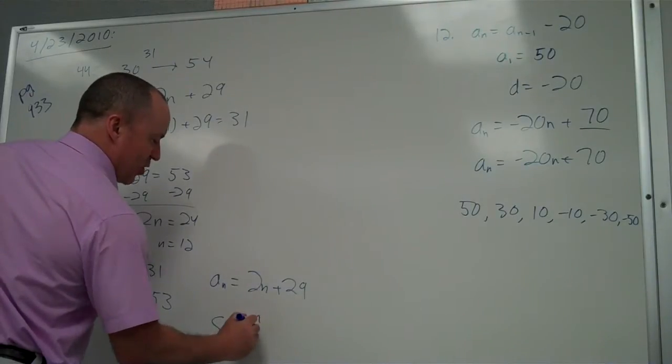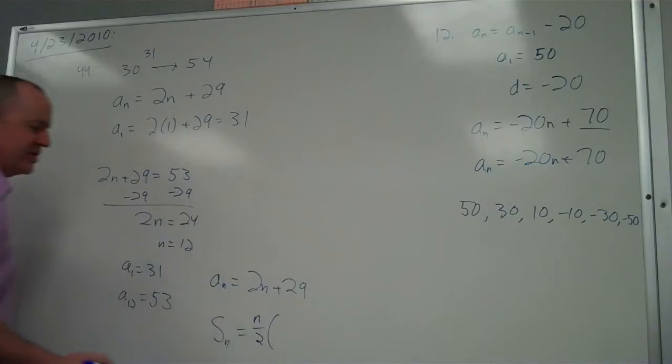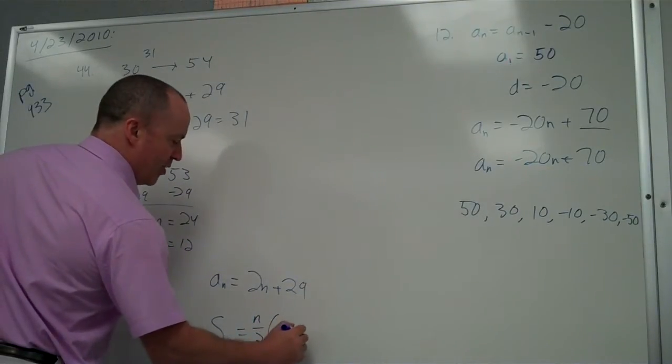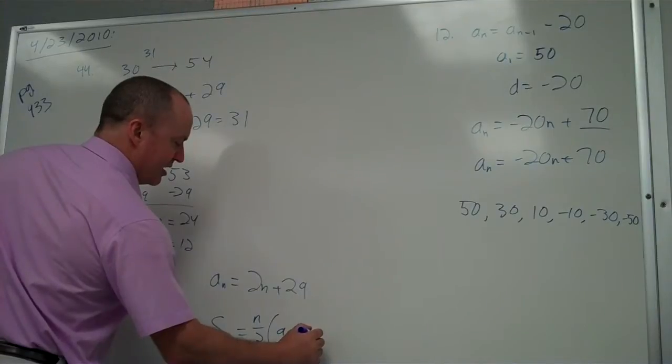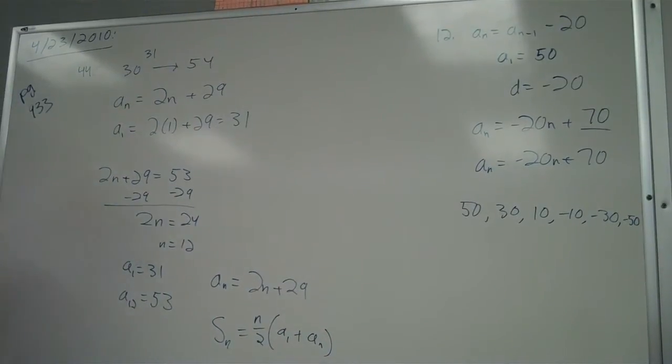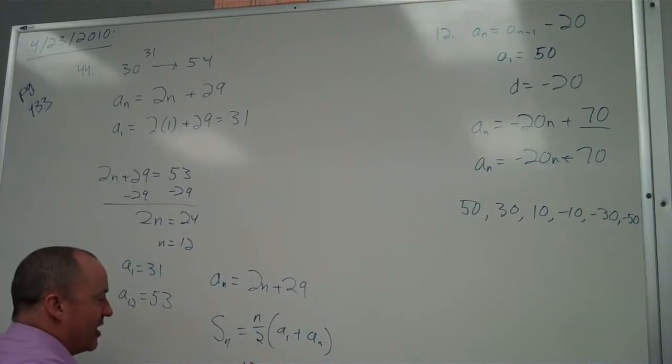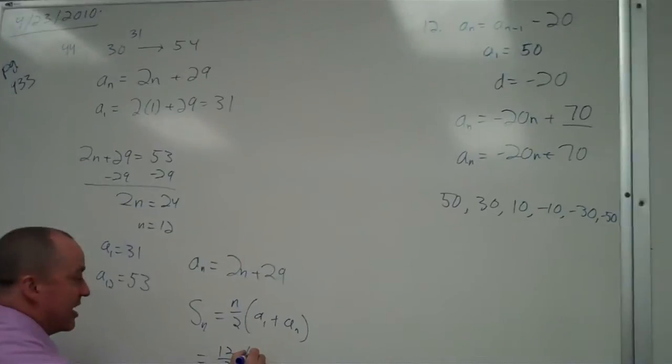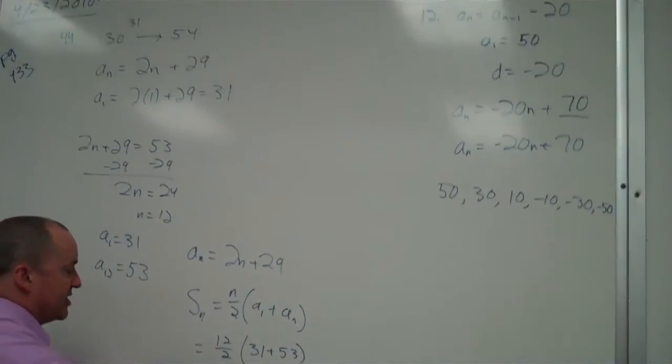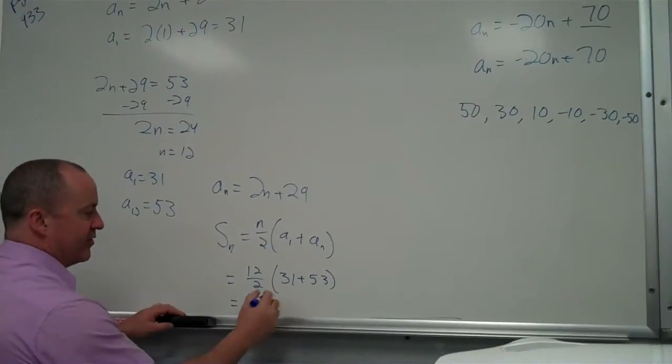Yes. S, this is, according to little Carl Friedrich Gauss, the sum of the nth terms is n over 2, a sub 1, plus a sub n. Is that the general formula? Yeah. Okay, so in this case it's 12 over 2 times 31 plus 53, which is 6 times 54.